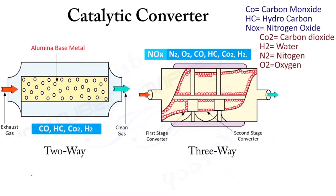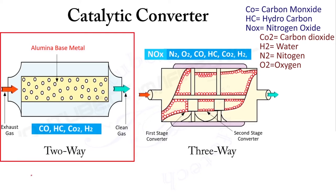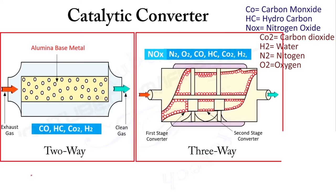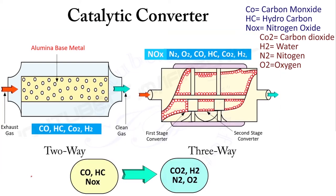Hi everyone. In this video we will discuss the working of catalytic converters. There are two types: two-way and three-way catalytic converters. The use of a catalytic converter is to convert harmful pollutants into harmless gases in exhaust emissions.